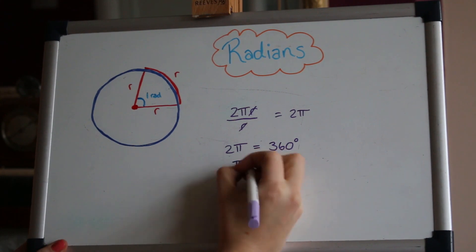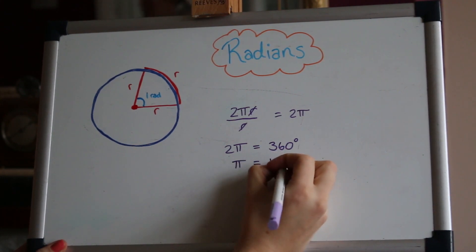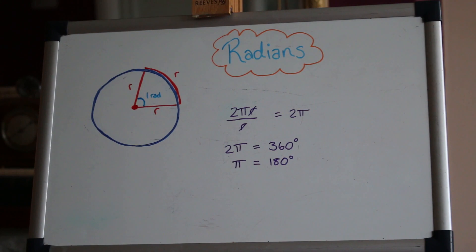So that's your conversion factor. You can simplify it to π is 180 or a half turn of a circle. So if you're trying to convert between degrees and radians you just need to times and divide by 180 or π whichever way around you're going.